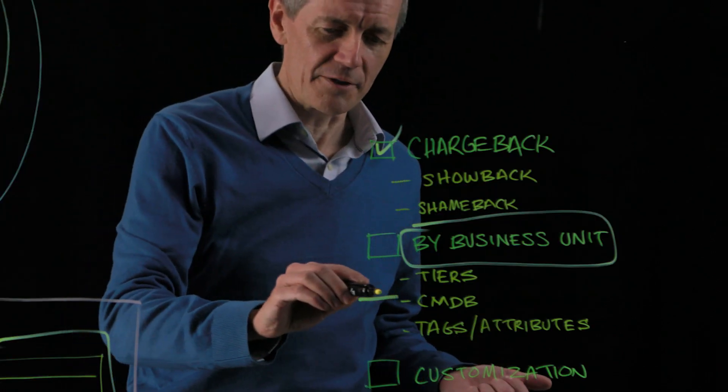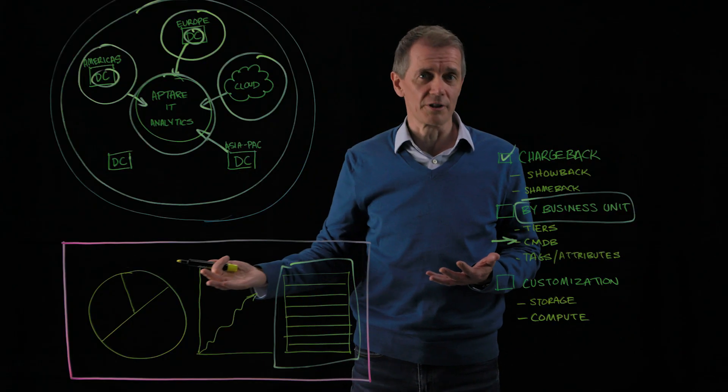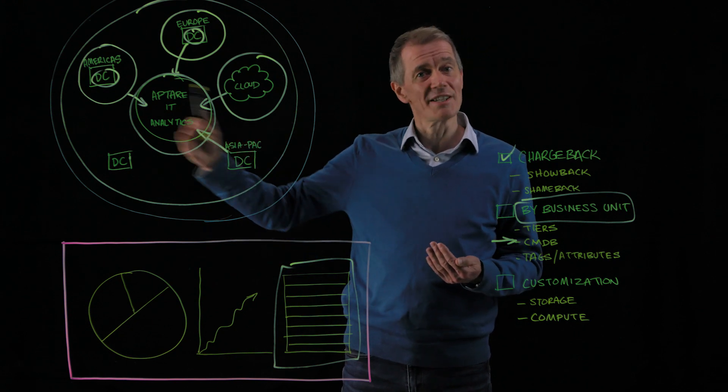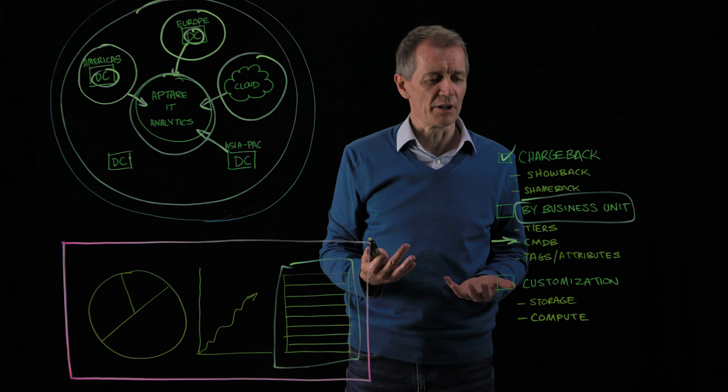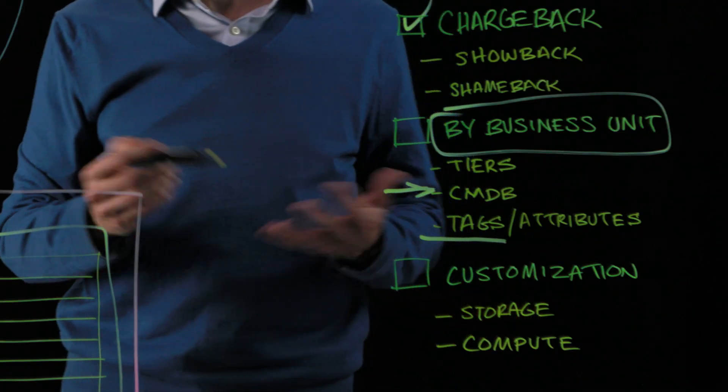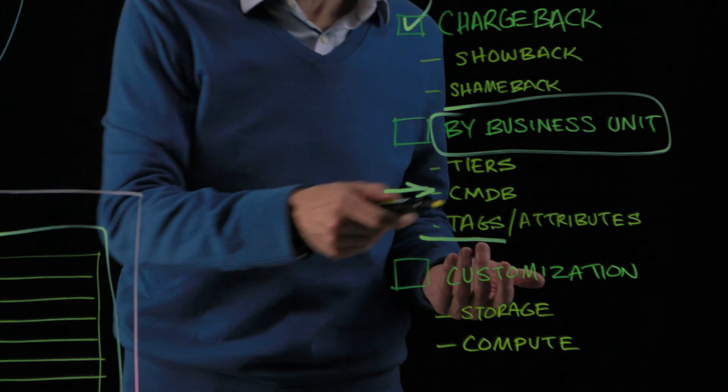We can interface to an external CMDB. So if there's an external source such as ServiceNow that is listing all of those assets and the business units they belong to, we can consume that as part of our Chargeback reporting. Other ways we can get it are through tags. So for example, with VMware, we can consume those tags if we're using tags within VMware.